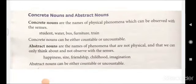The next topic is concrete nouns and abstract nouns. Concrete nouns are the names of physical phenomena which can be observed with the senses — things which can be physically seen or touched. Abstract nouns are the names of phenomena that are not physical; we can only think about them and not observe them with our senses. Examples of abstract nouns are: happiness, size, friendship, childhood, imagination, etc. Abstract nouns can also be both countable or uncountable.